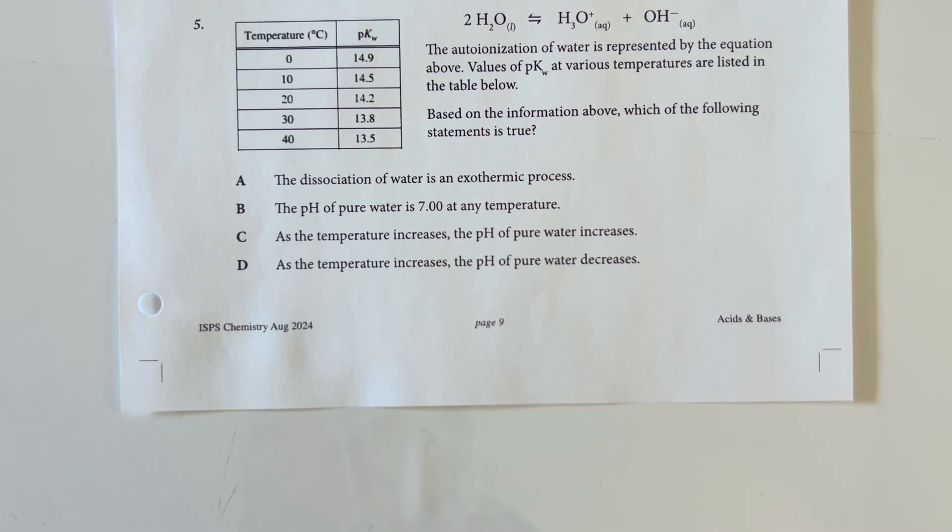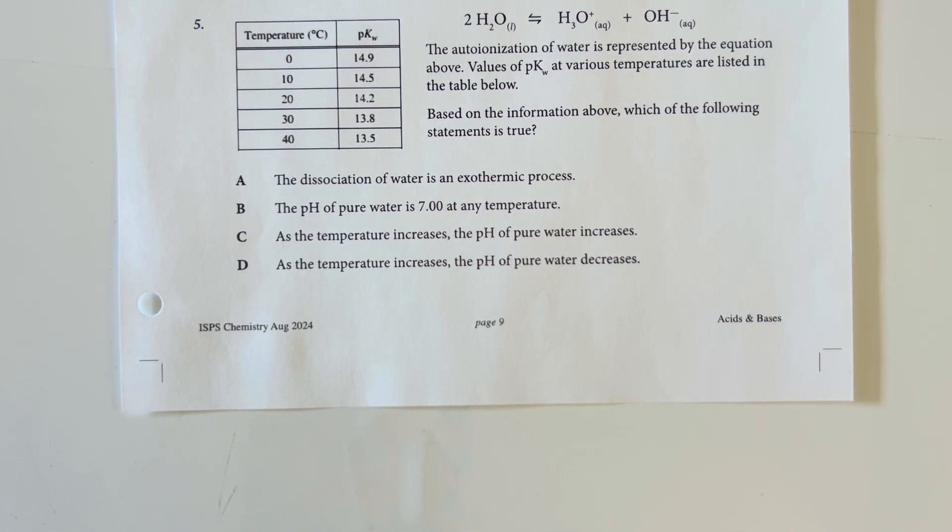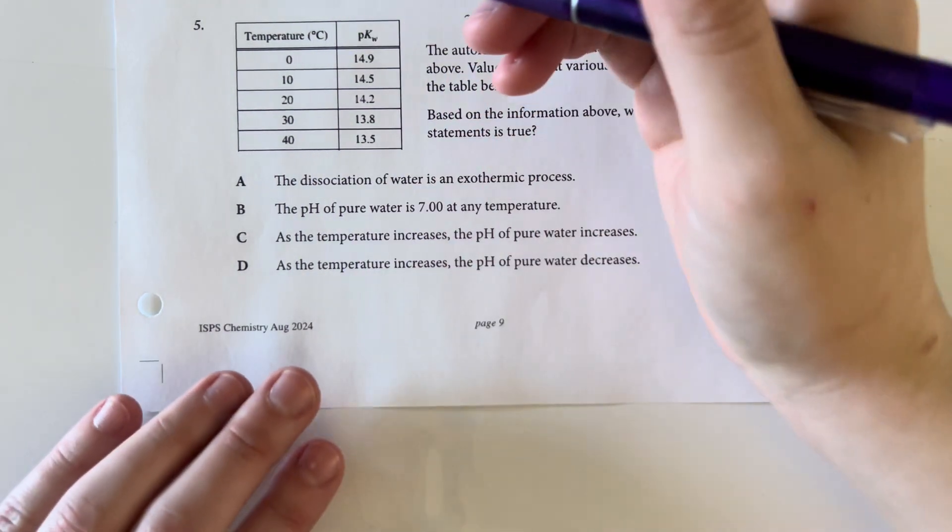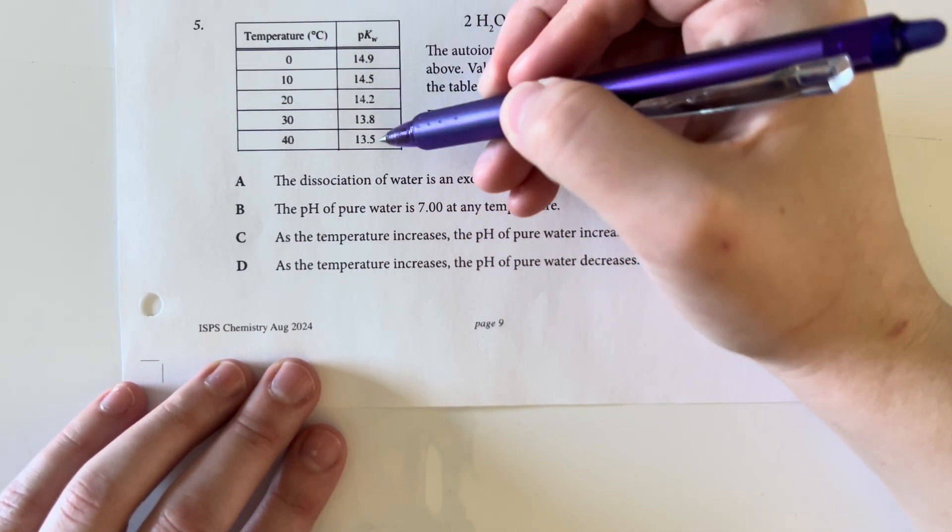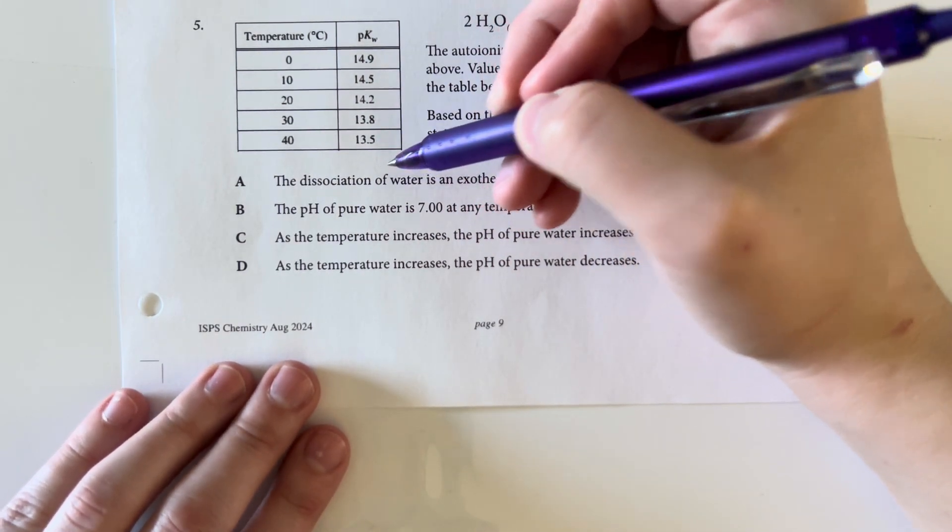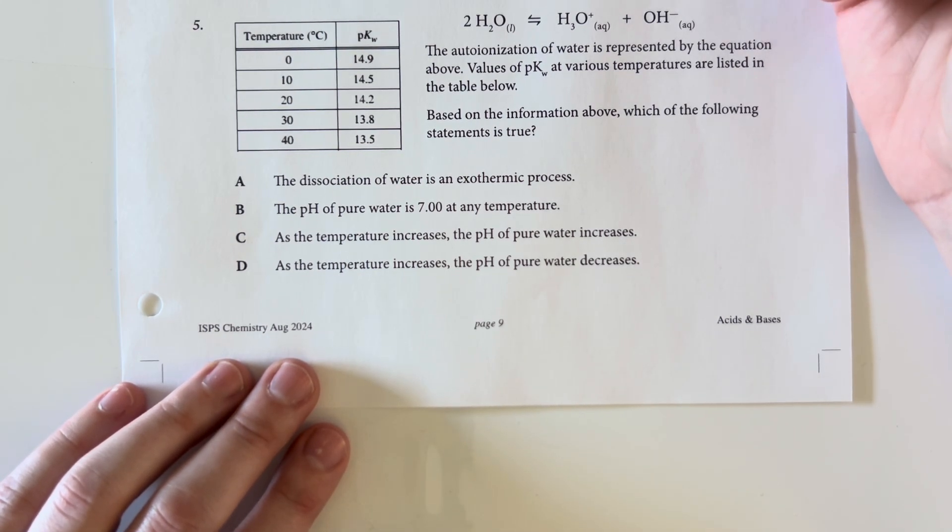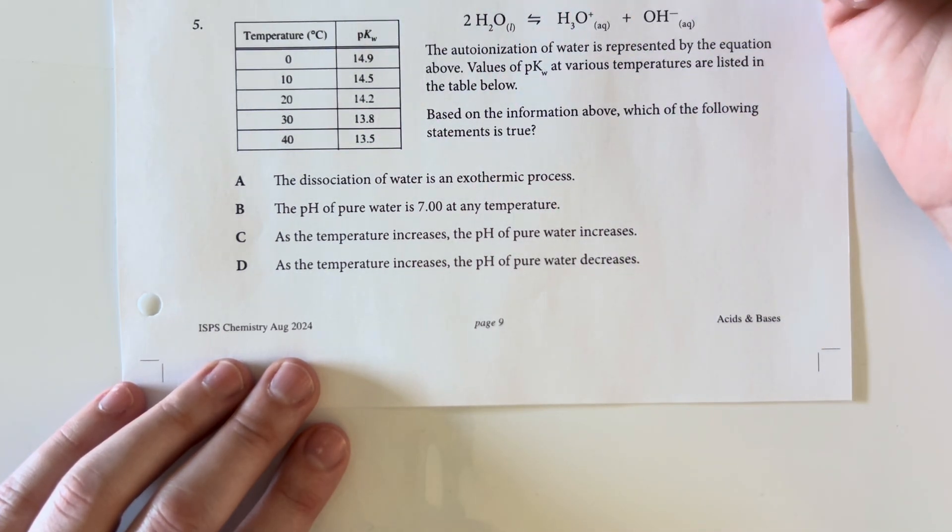The auto-ionization of water is represented by the equation above. Values for pKW at various temperatures are listed in the table to the left. Based on the information above, which of the following statements is true? So we can see that as we increase our temperature, our pKW decreases, and that means that we are becoming more acidic as we increase our temperature.